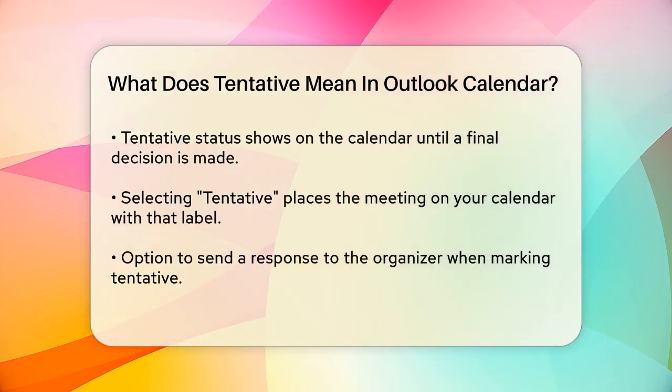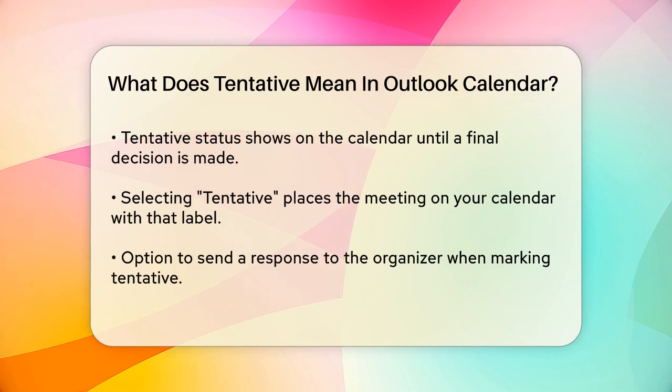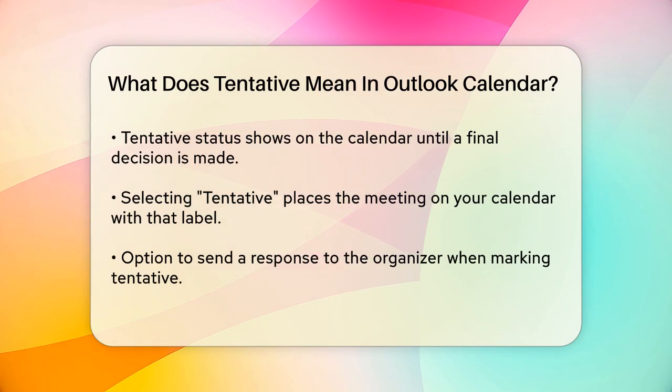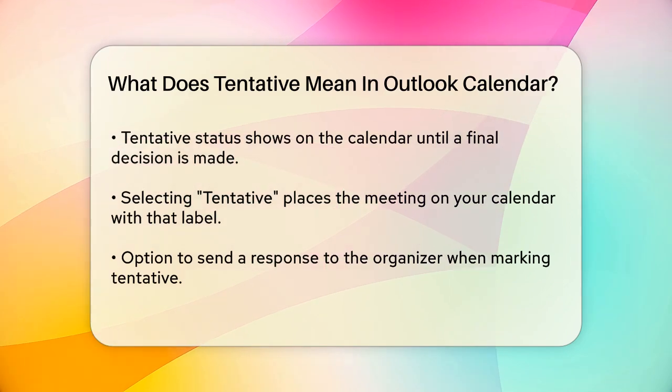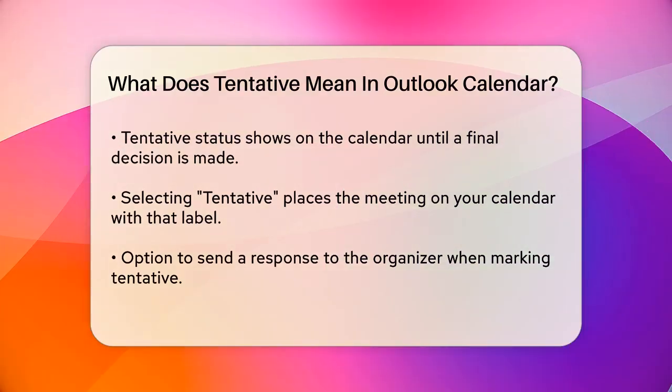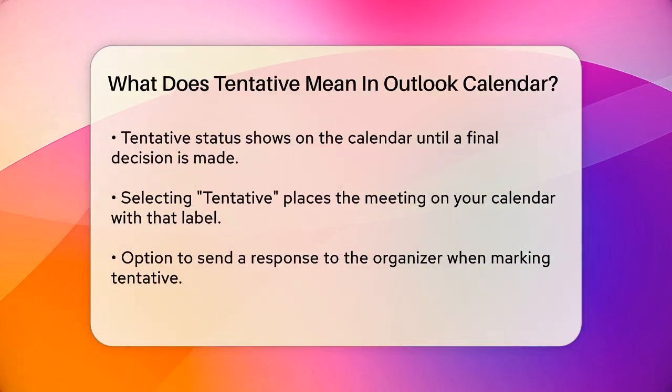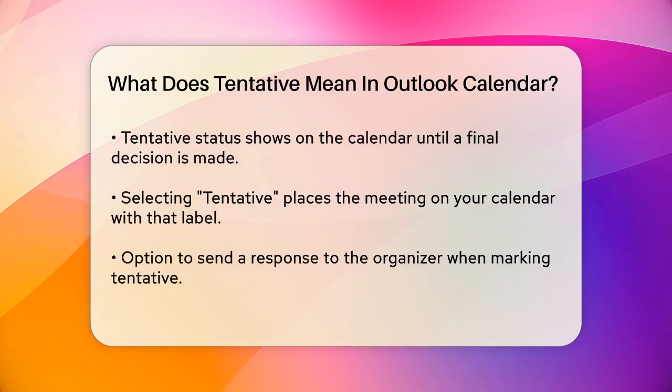When you choose tentative, the meeting will be placed on your calendar, but it will be labeled as tentative until you make a final decision.